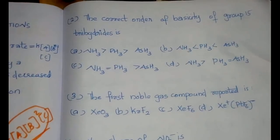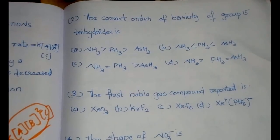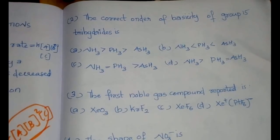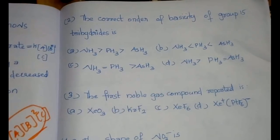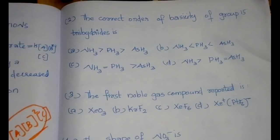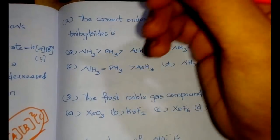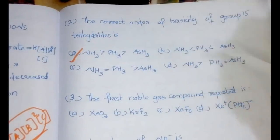The second question we have already discussed in one of the videos. The correct order of basicity of Group 15 trihydrides would be NH₃ > PH₃ > AsH₃.